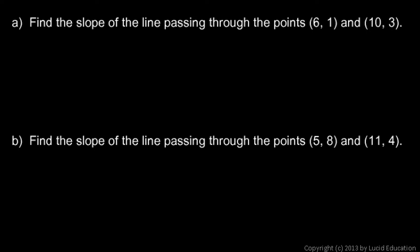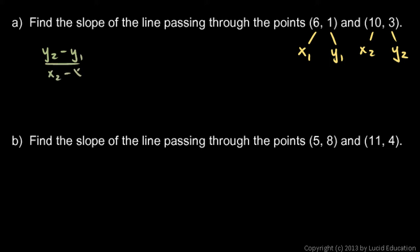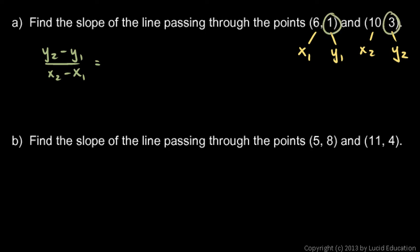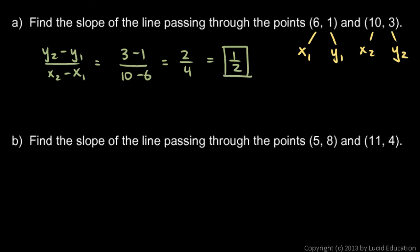Find the slope of the line passing through the points 6,1 and 10,3. These numbers are the coordinates of the two points. Think of the first point as point 1 — so x1 is 6 and y1 is 1 — and the second one as point 2, so x2 is 10 and y2 is 3. Then the slope is y2 minus y1 over x2 minus x1, which is 3 minus 1 over 10 minus 6. That comes out to 2 over 4, which reduces to 1 half. So the line through those two points has a slope of 1 half.